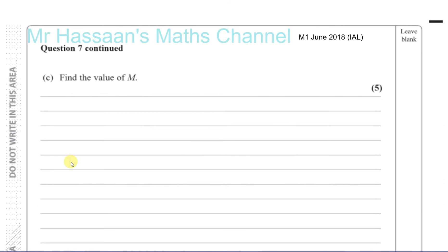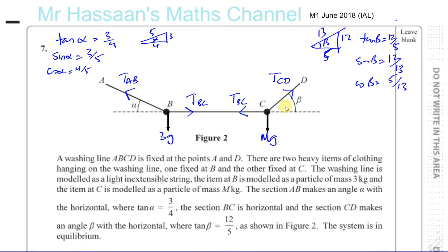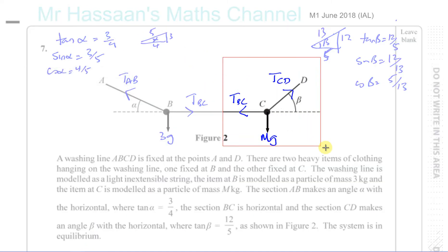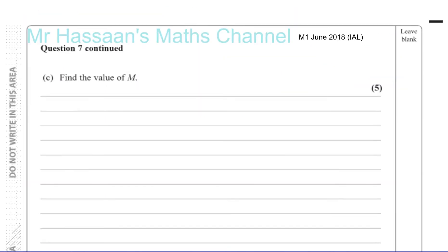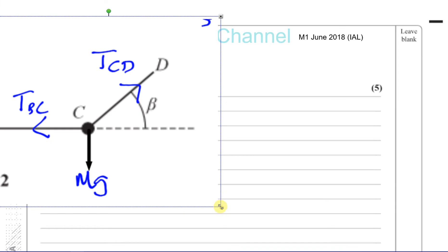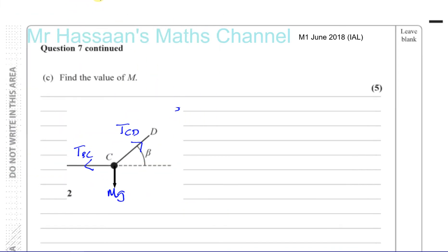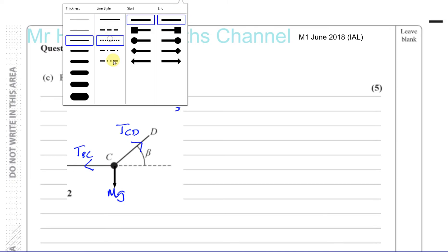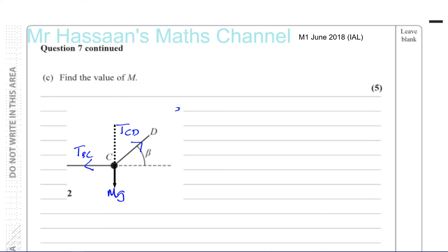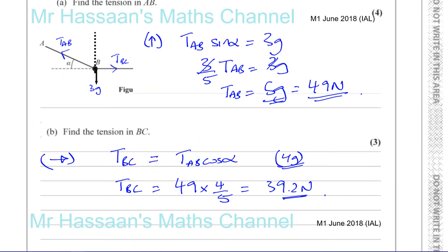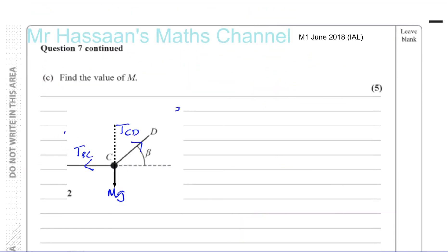Now, for the next part of the question, find the value of M. So I need to deal with this part. So let me take this part here. Let me take this section here and deal with this section on its own. Now, I know tension in BC is already given, already found. The tension in BC was 4 G Newtons. So this is 4 G Newtons, this part. So now I can find what the tension in CD is by resolving horizontally.